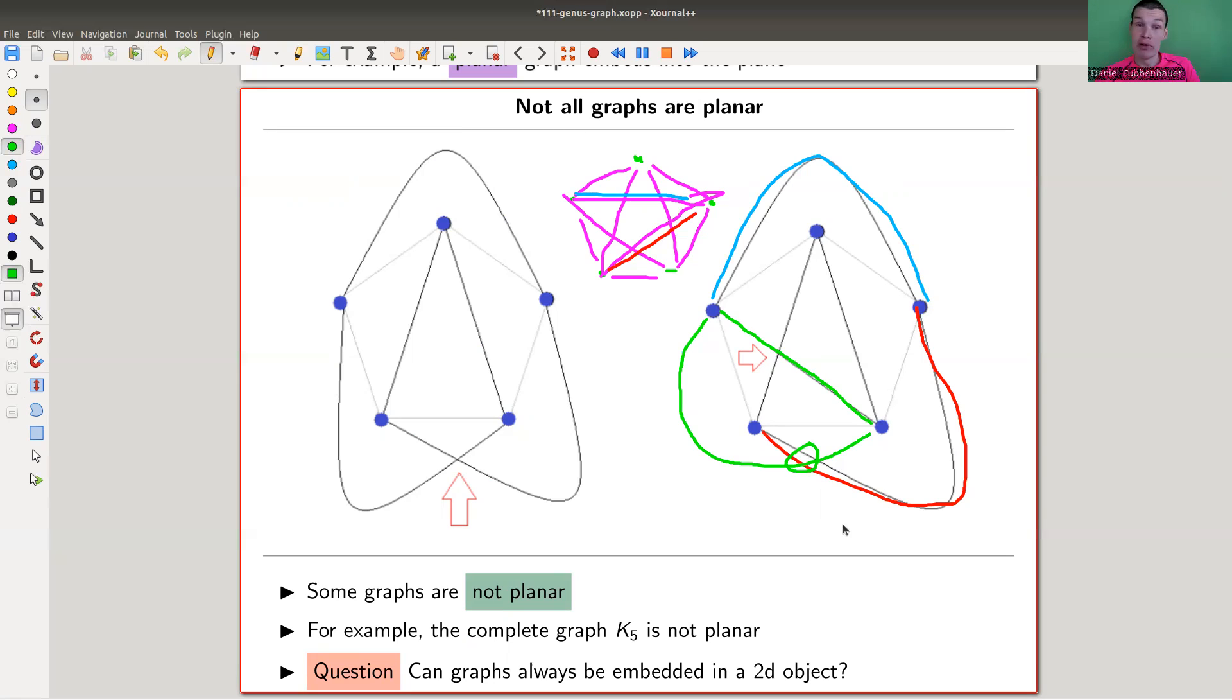You might ask the question, maybe we need to have something more sophisticated than the plane, something more complicated. Maybe we can embed K5 into that object. That's exactly the question I would like to address. Into the plane is just drawing on a piece of paper - it's the easy one. But you can draw on more complicated objects, and maybe that's what you need to embed this graph, to draw it without intersections.